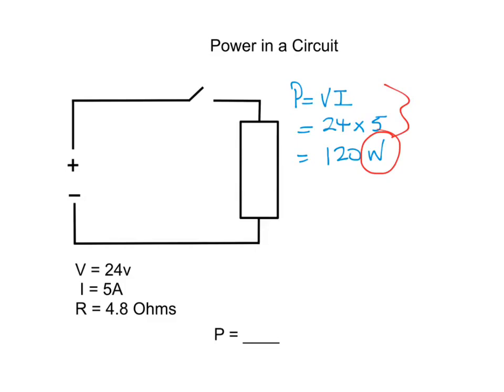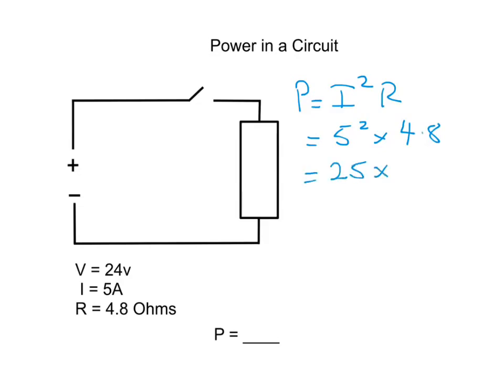Let's have a look at the other formula variations we can use. We'll remove that and we'll write in another formula. P equals I squared R. So if we don't have the voltage, we only have the current and the resistance, we can still calculate our power. Let's substitute them in. 5 squared times 4.8, which equals 25 times 4.8, which will also equal 120 watts.